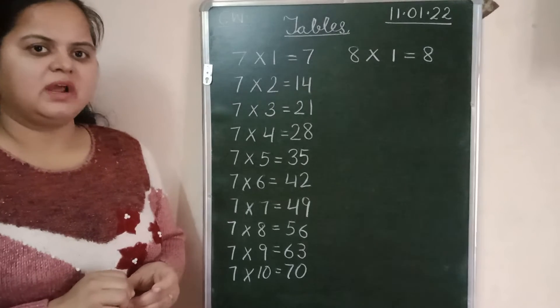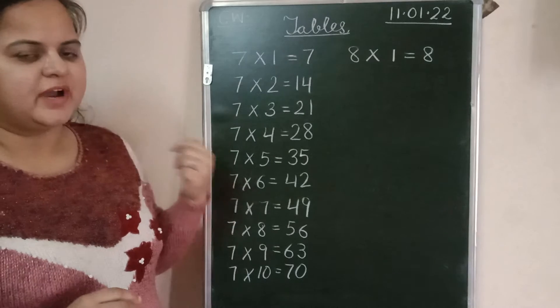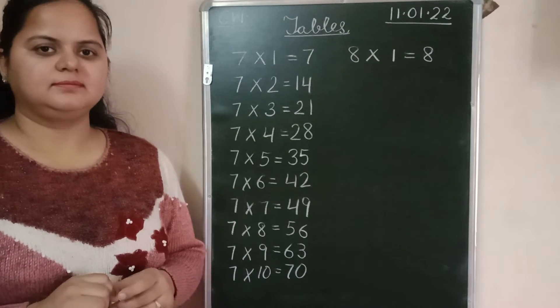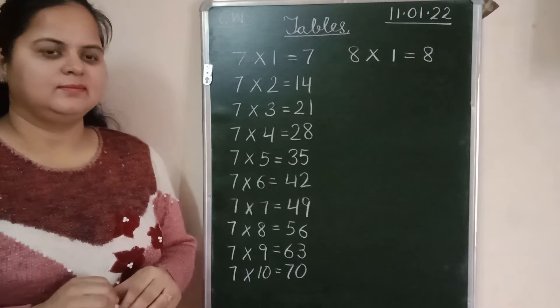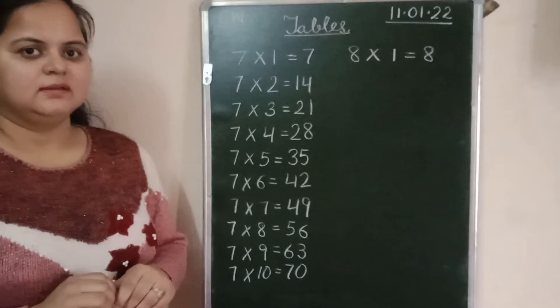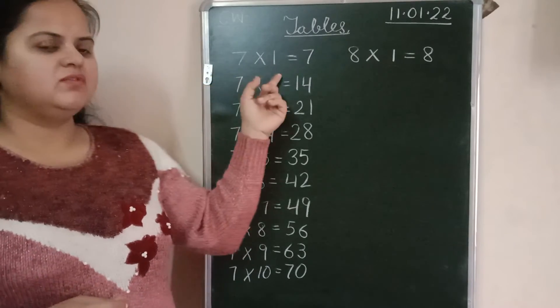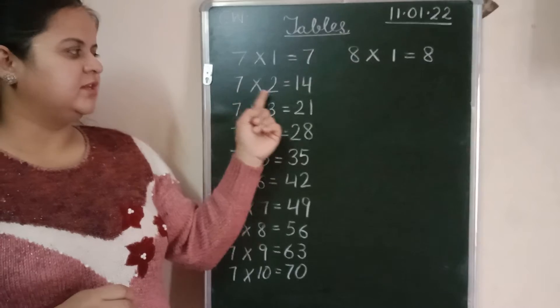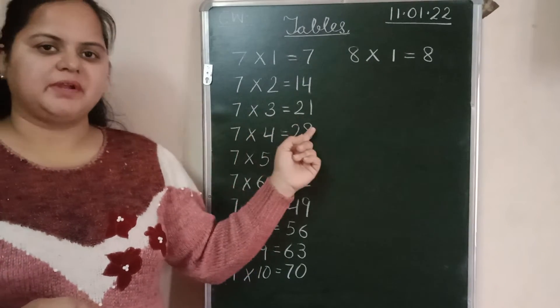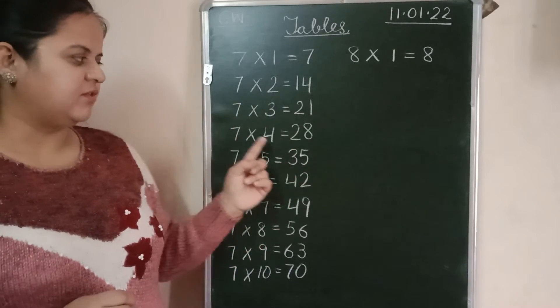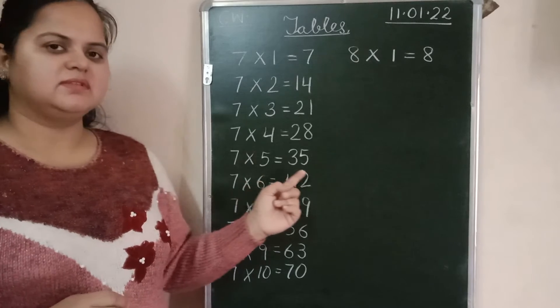I hope you all have done the table of 7. If not, then do it first. Okay. Let's revise the table of 7 again. 7-1s are 7. 7-2s are 14. 7-3s are 21. 7-4s are 28. 7-5s are 35.